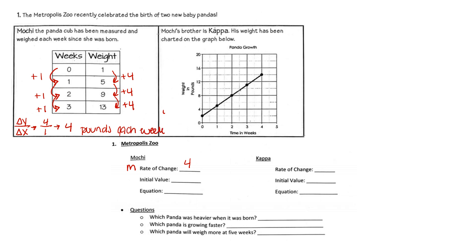For Mochi's initial value, we look at where x equals zero. Zero is paired with one, so Mochi weighed one pound at birth. We use all that information to write our equation: y equals four x plus one, since m and x always go together and the initial value goes at the end as b.